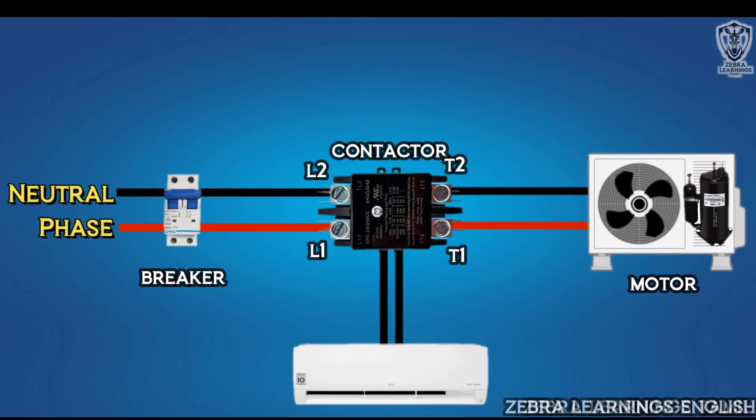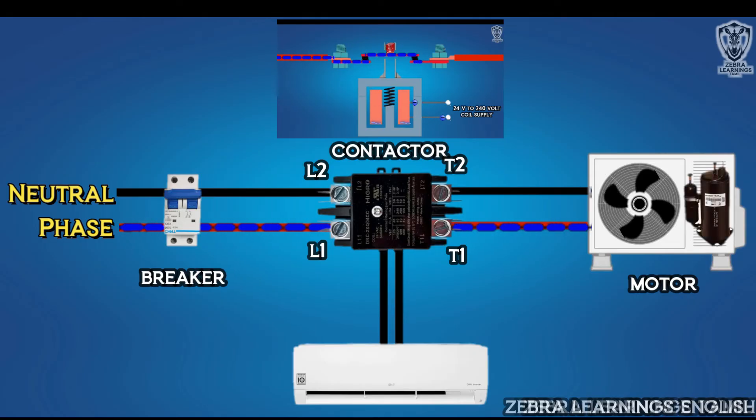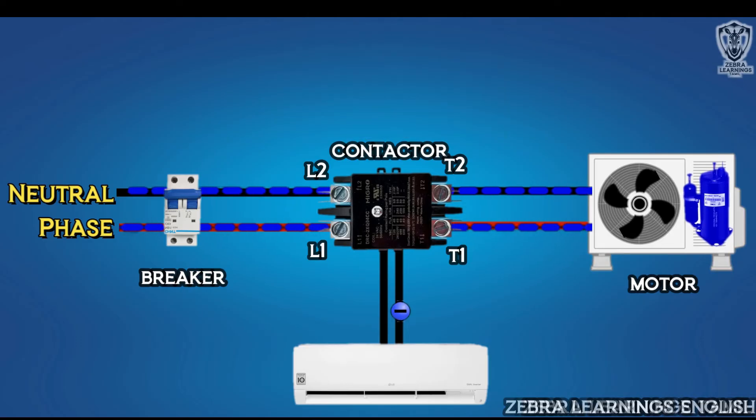After increasing room temperature, 24V power supply will come from the indoor unit to the contactor. Now the contactor energizes and creates an electromagnetic field that attracts the terminal and closes the circuit. After the circuit is closed, the electricity from the main power supply goes through it and the compressor and fan motor run.